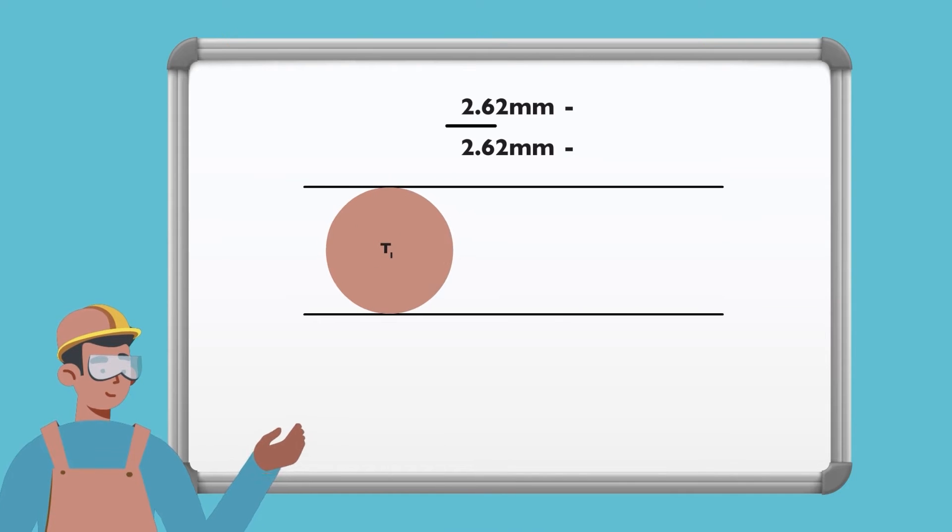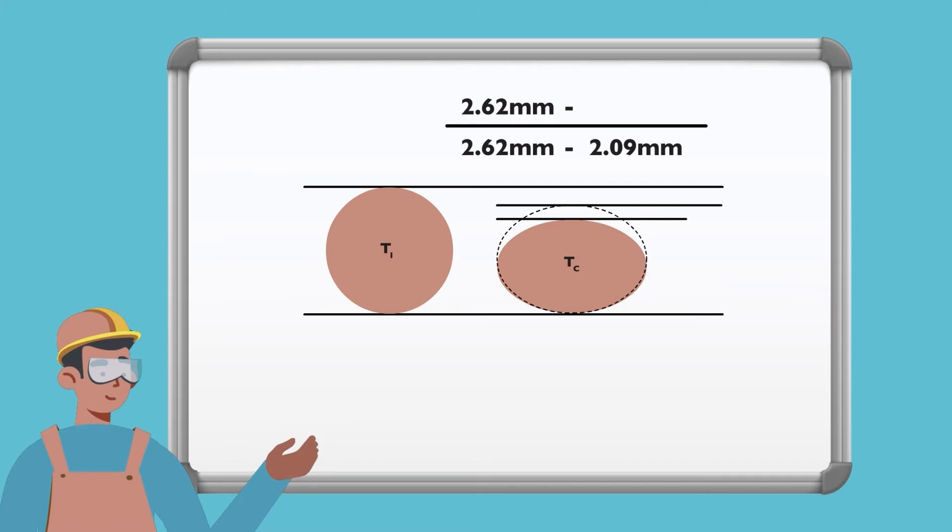Let's have a look at a worked example. Here a 2.62 mm cross-section seal Ti is compressed to a fixed dimension of 2.09 mm TC. When it has been removed, the cross-section measures 2.51 mm TR.